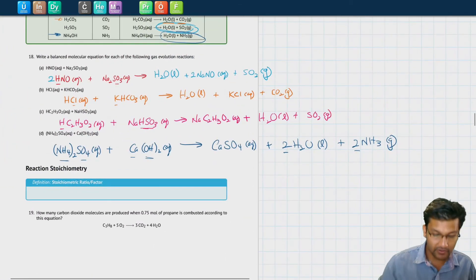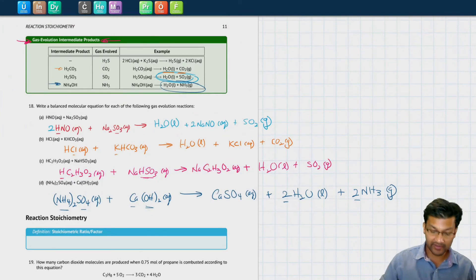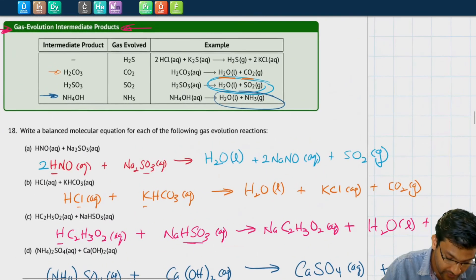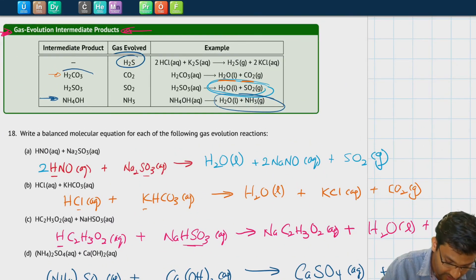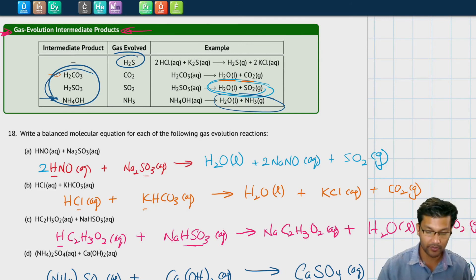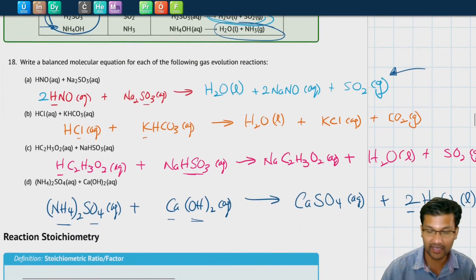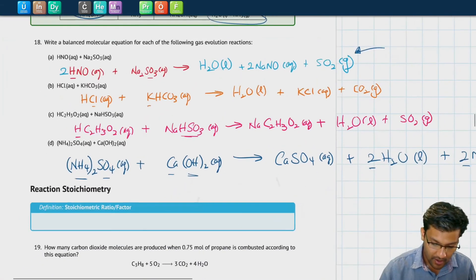So those are some gas evolution reactions. I just wanted you to pay attention to them. Whenever you see these compounds in your products, know that they will break down into water and the appropriate gas. Make sure that you break them down in your equations as well. The reason we do that is so that when we look at our equations, we know that there's a gas right there. So when we're performing this experiment, we should expect to see some sort of bubbles or some indication that a gas is being formed.